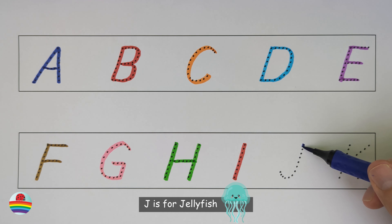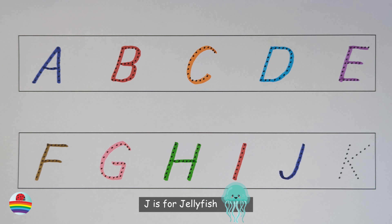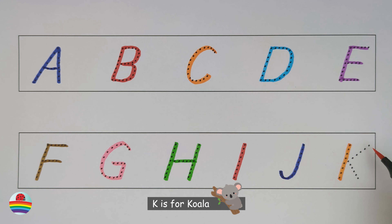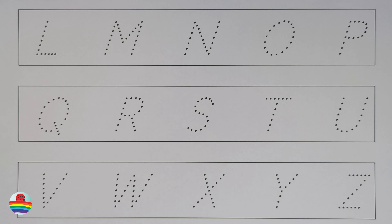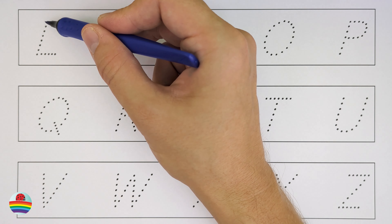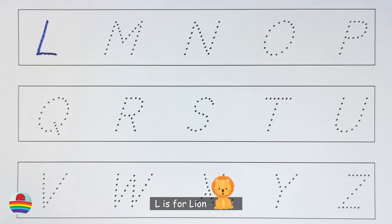J. J is for jellyfish. K. K is for koala. L. L is for lion.